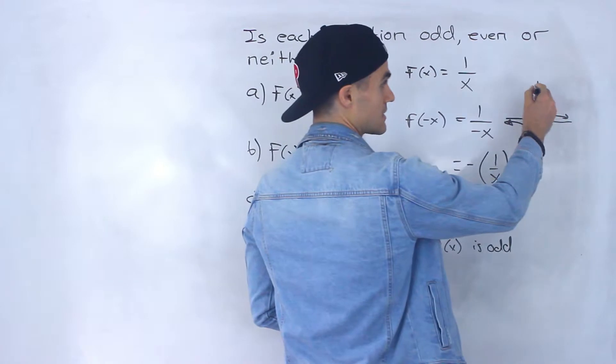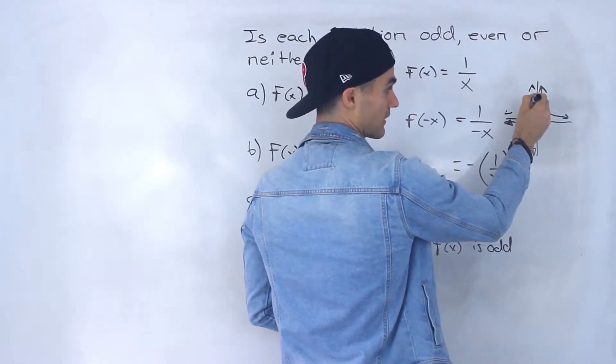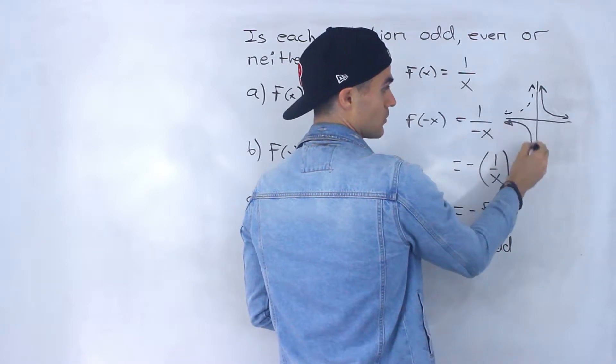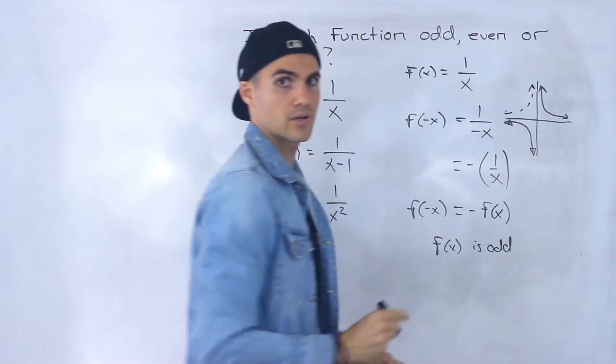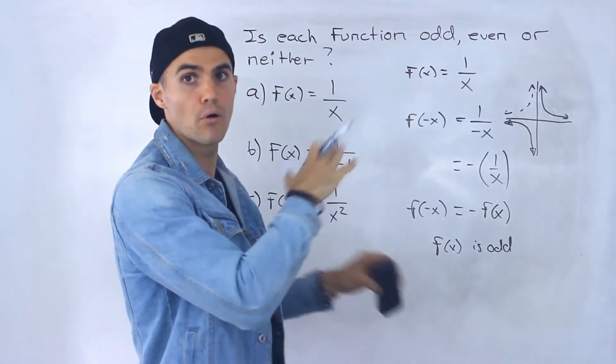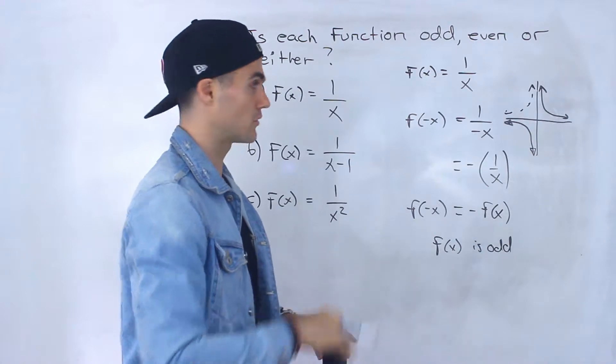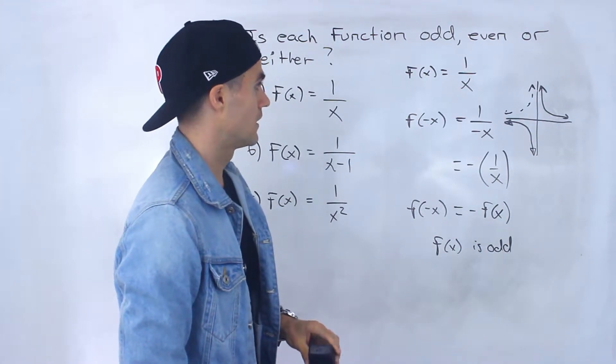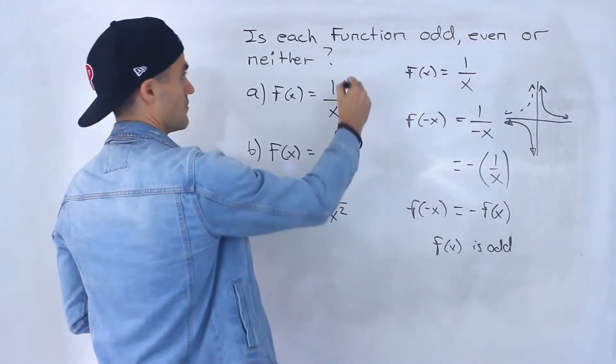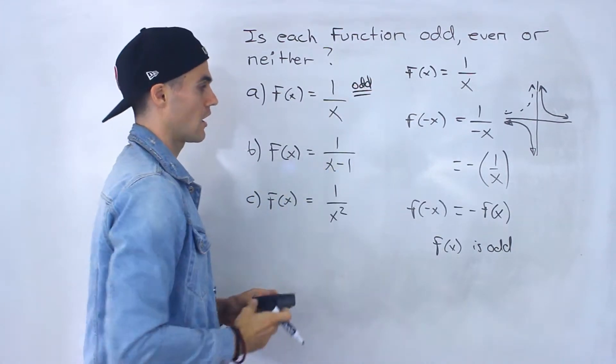And so notice if we take this, reflect it in the y-axis, we would get that. And then reflect this in the x-axis, we would end up with that. So that's another way to tell whether a function is odd when you do both reflections. Versus an even, it's just that one reflection on the y-axis. So either way, part a f of x equals 1 over x is an odd function.